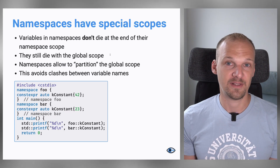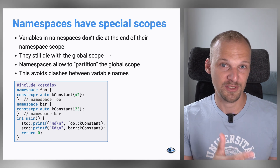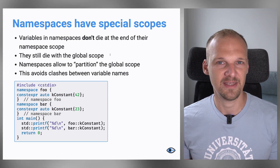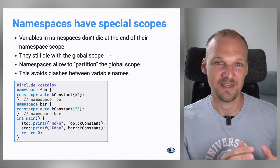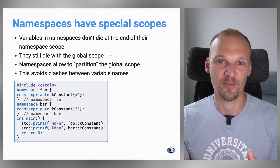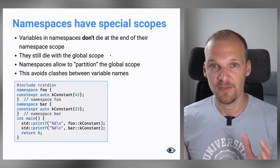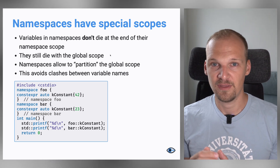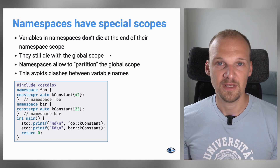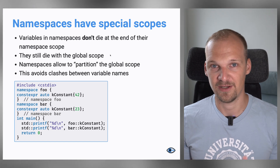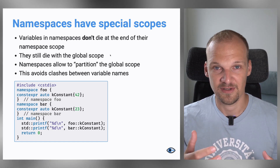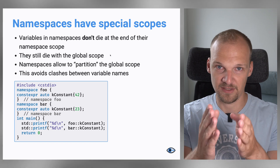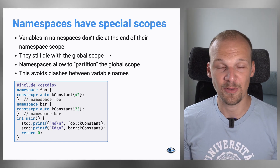You might have noticed that we open and close curly brackets here, and if you watched the previous video you might think: is this a scope? Do variables live only within the namespace and then die? The answer is no. Every variable that lives in a namespace still lives in global scope — its name is just modified by the namespace. Think of it as taking the namespace and attaching it as a prefix to your variable name with double colons in between. So if I have a variable in namespace foo, I would use it outside the namespace as foo::variable_name.